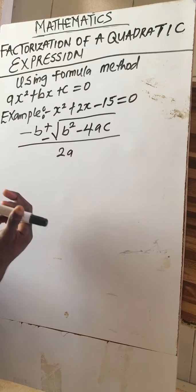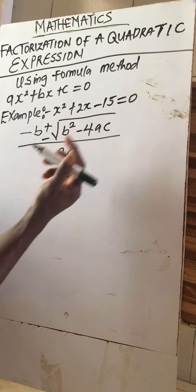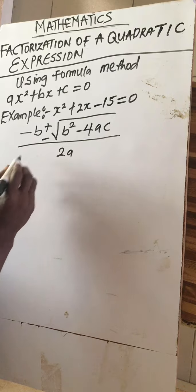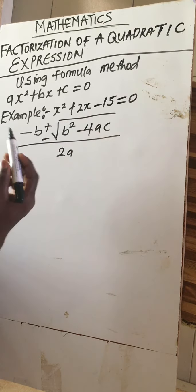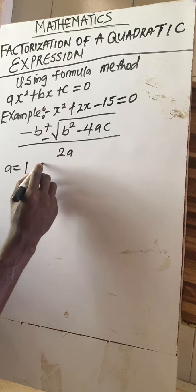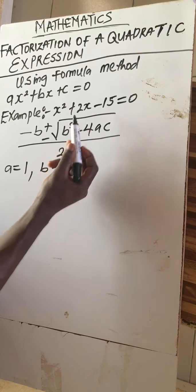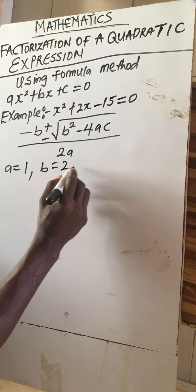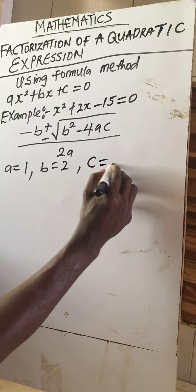First, we identify each value. We find a, which is the coefficient of x squared — that's one. Then b, the coefficient of the second term — that's two. And c, the constant — which is minus 15.